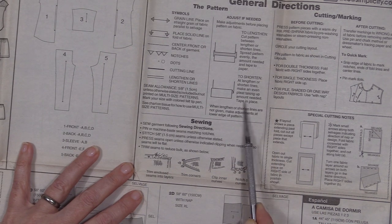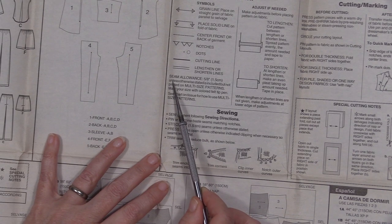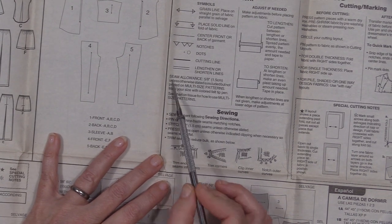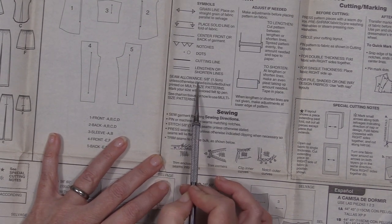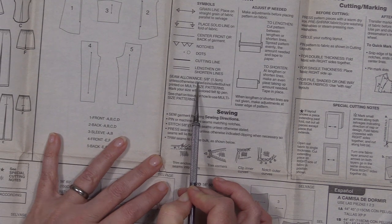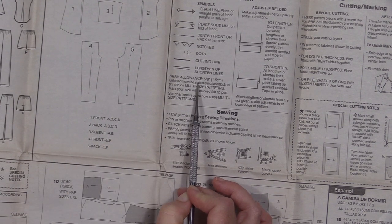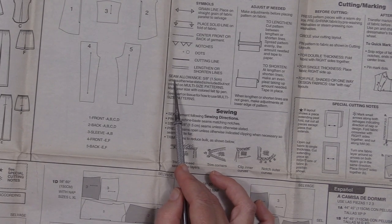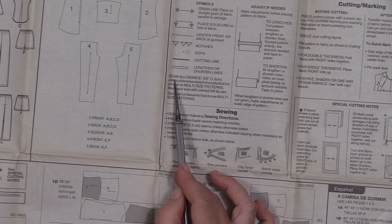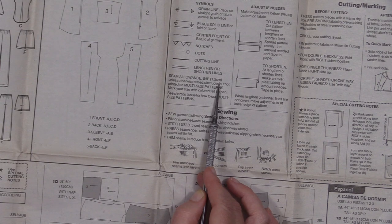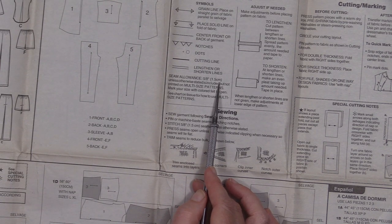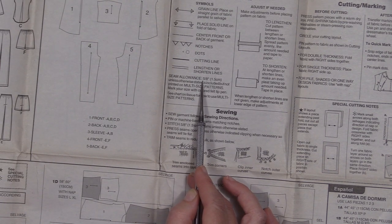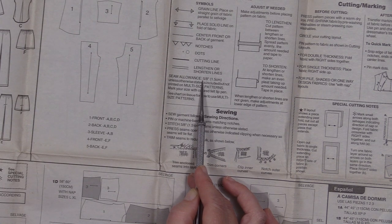And then here this is really important, you always want to check your seam allowance that they've already factored into the pattern when it was created. So the seam allowance for almost all commercial sewing patterns is going to be 5/8. You can adjust that but know that when you adjust your seam allowance it is going to change the finish size of the garment.